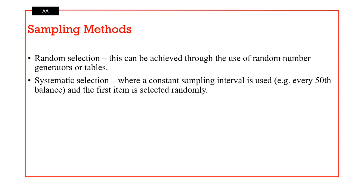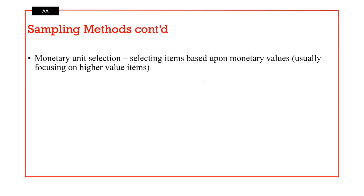Systematic selection uses a constant sampling interval — for example, selecting every 15th item, with the first item selected randomly. Monetary unit selection is common; most auditors sample for the highest or lowest amounts so they can see where procedures were followed, as these may be unusual transactions requiring further audit investigation.